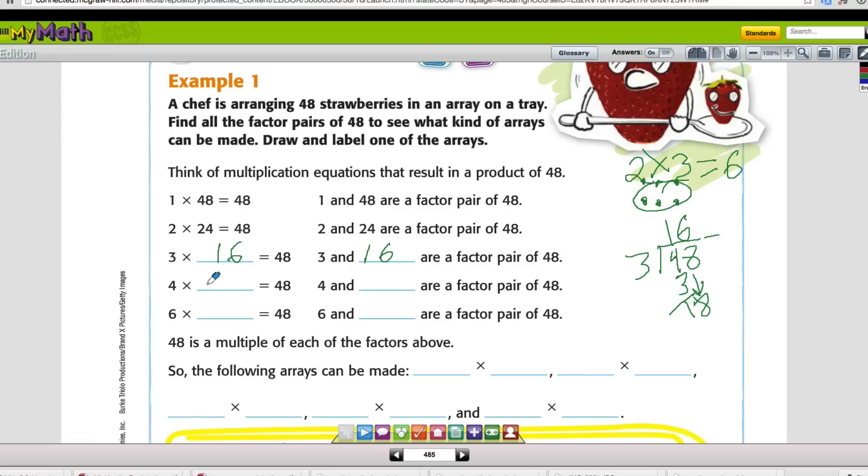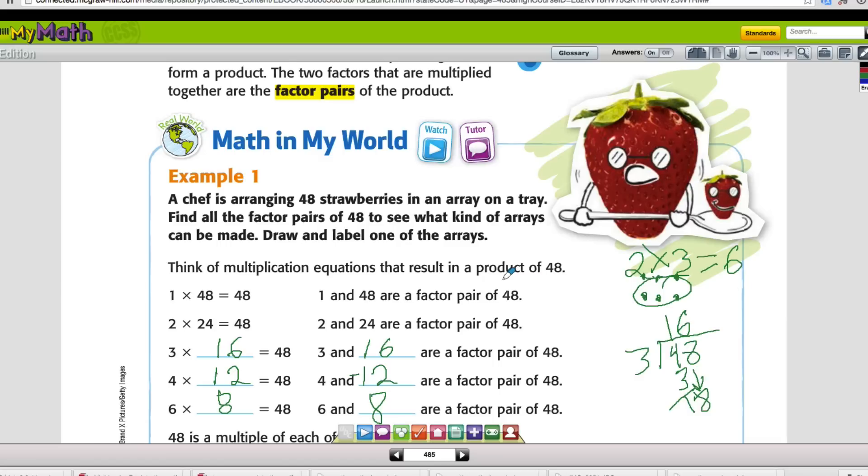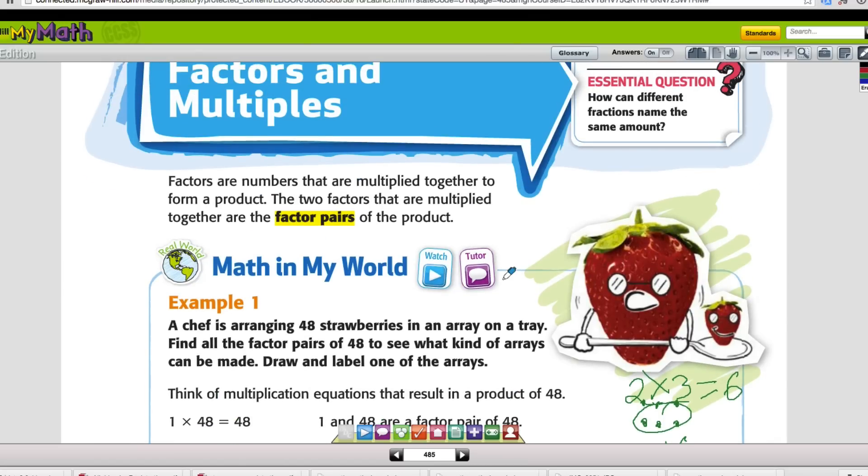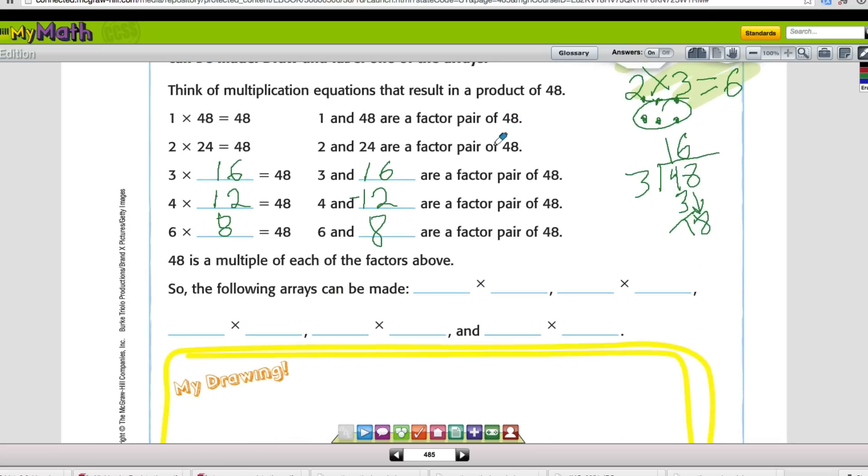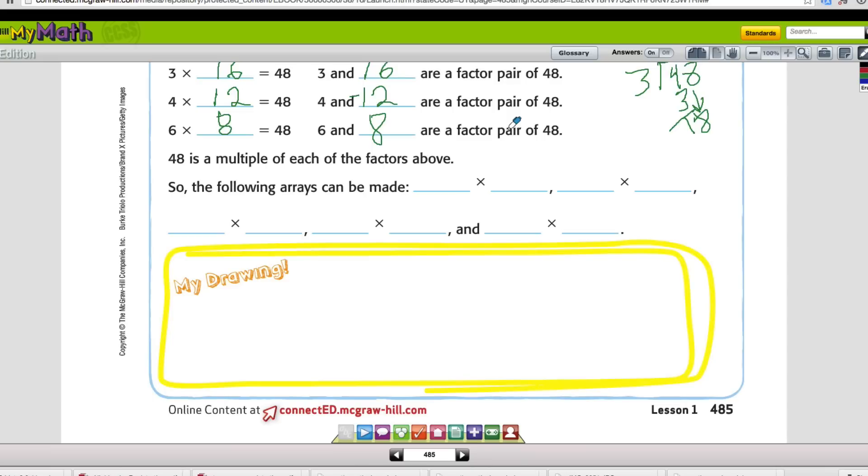I do know that 4 times 12 equals 48. So we'll just write that down. 4 times 12 is 48, and so 4 and 12 are the factor pairs for 48. I also know that 6 times 8 is 48. So we'll just put our 8's in there.